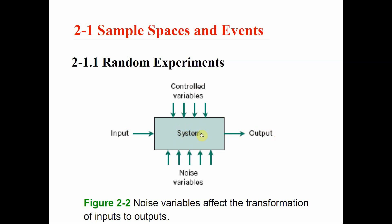However, in real life, things are not always deterministic because we have noise variables. Noise variables are not the same as control variables — control variables are adjustments we can make ourselves, but noise variables are unwanted effects that may affect our system and we cannot control them. If we apply the same input, we might get a different output because of these unwanted effects.